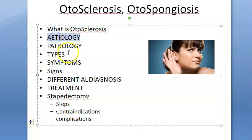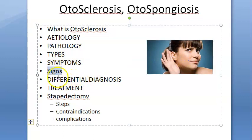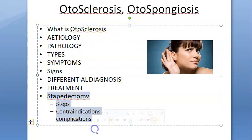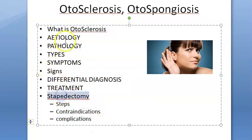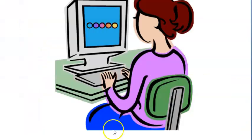We will look at what otosclerosis is, its etiology, pathology, types, symptoms, signs a doctor will elicit, differential diagnosis, and treatment. In treatment, there is stapedectomy — we'll cover all the steps, contraindications, and complications. Let's get started.